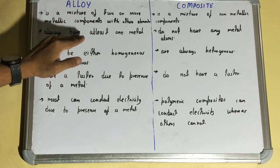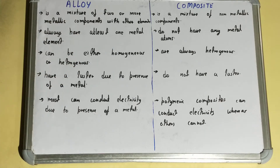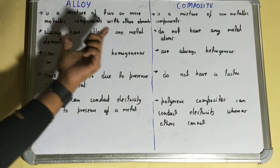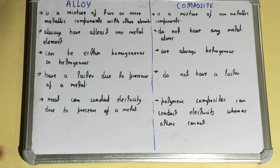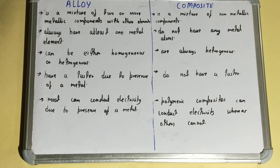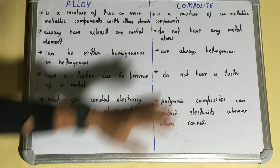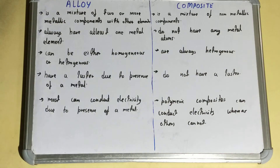Next, if we talk about the alloy, alloy always has at least one metal element. Any alloy you consider will have at least one metal element — for example, steel, which contains iron as a metal. But if you talk about the composite, they do not have any metal atom in them.